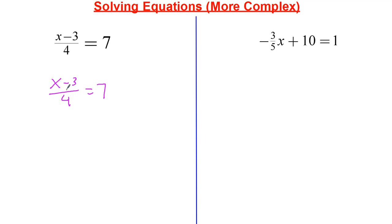So x minus 3 divided by 4. What I'm going to do is I need to get rid of this at the bottom, so I'm going to go ahead and multiply by 4, and then I multiply this side by 4. So now that's gone. This is just going to be equal to x minus 3 is equal to 28.